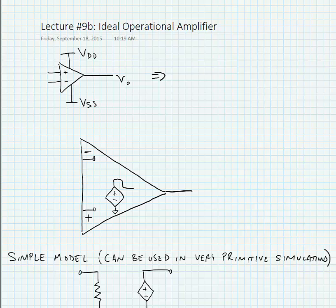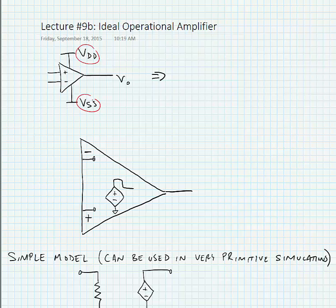In this slide we're going to be examining the properties of an ideal operational amplifier, which is a differential amplifier. Our operational amplifiers have typically five terminals: two voltage supplies — a positive supply rail and a negative supply rail — a non-inverting terminal, an inverting terminal, and of course our output.